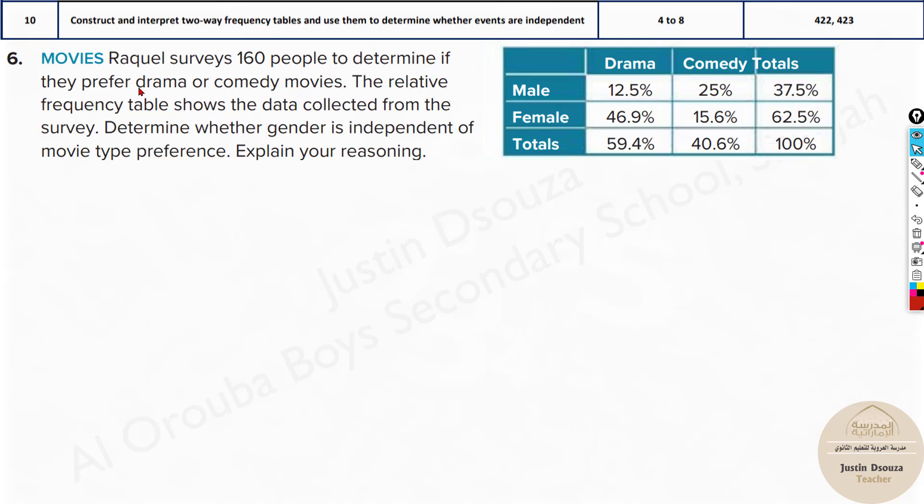Next question: Raquel surveys 160 people to determine if they prefer drama or comedy movies. The relative frequency table shows the data collected from the survey. Determine whether gender is independent of the movie type preference. Explain your reasoning. Here you need to first understand this is a relative frequency table. The probabilities are already given.